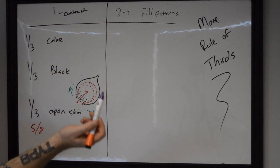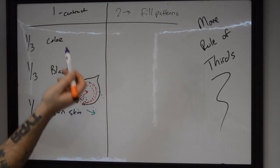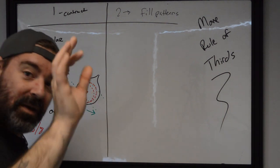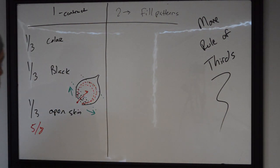You have one pass of third, one pass of color, one of black, and one open skin, which can be a little bit of tooling if you need it.